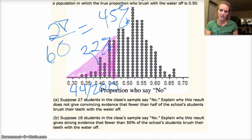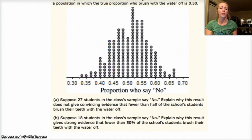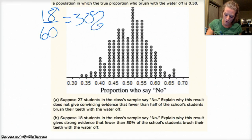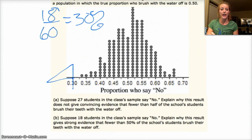B asks if only 18 people out of the 60 say no, explain why this result gives strong evidence that fewer than 50% of the school students brush their teeth with water off. So 18 students out of 60 is about 30%, which is over here. And according to our simulation, we had no results assuming that the mean is actually 50, we had no results of 0.3 or less. Therefore, we would think that our initial guess that the mean or the average number of people who say no is 50%, we think that it's actually probably less than that.